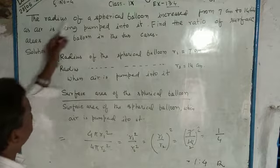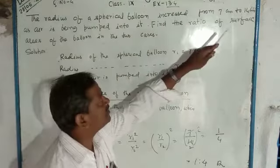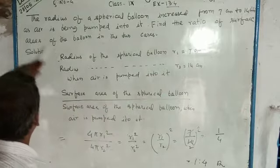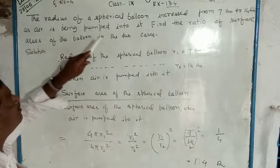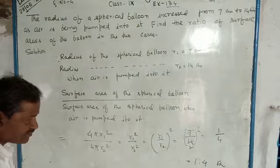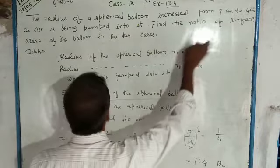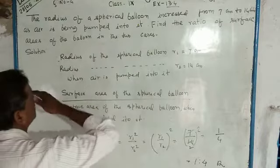The radius of a spherical balloon increased from 7 cm to 14 cm as air is being pumped into it. Find the ratio of the surface area of the balloon in the two cases.